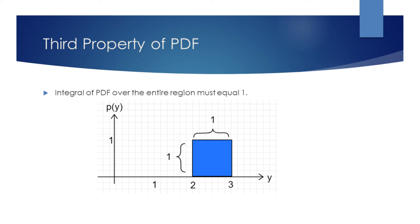The third property is that the integral of PDF over the entire region must be equal to 1. We can see that the area of our example is 1 times 1, so our PDF satisfies this property.